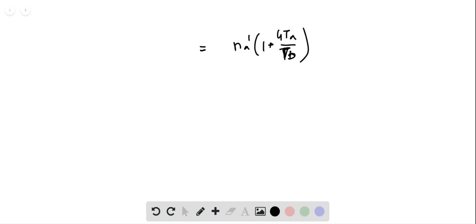And on the left-hand side we have VA by R times PA by TA plus 4 PB by TB. From this we write NA dash equals VA by R, PA by TA plus 4 PB by TB, divided by 1 plus 4 TA by TB.